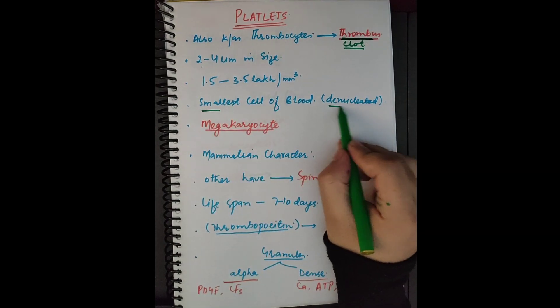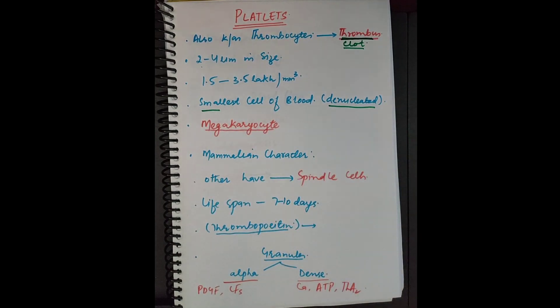Platelets are the smallest cells of the blood, and they are also denucleated — they do not possess any nucleus. Similarly, RBCs are denucleated and platelets are denucleated, but WBCs are nucleated cells.